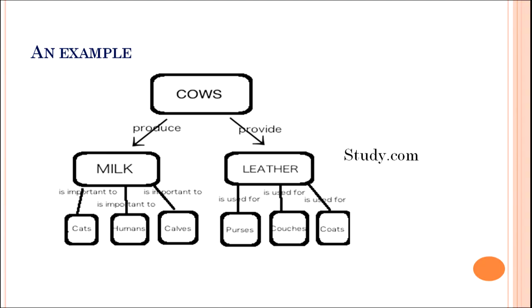Here is an example. Cows give milk and leather. Imagine if the word 'produce' or 'provide' was not written — we would not know the relationship. Cows produce milk; milk is important to cats, humans, and calves. Cows provide leather; leather is used for purses, couches, and coats. So now you understand the importance of a concept map — the role of circles, boxes, linking phrases, arrows, and the terms which are subordinate and superordinate. The idea becomes crystal clear just by looking at the concept map.